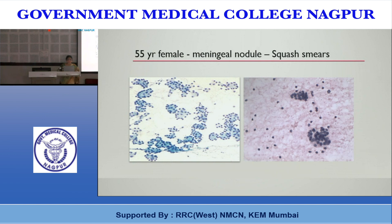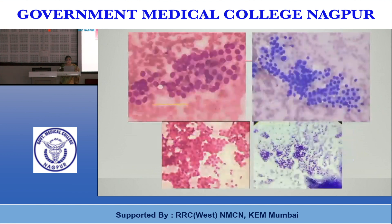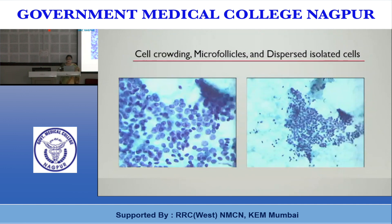In some cases, crowded follicular cells form ribbons or trabeculae more prominent than microfollicles, or sheets within which microfollicles must be searched. At times, plenty of dispersed cells are seen alone with no formations, showing mild variation in nuclear size and evenly dispersed granular chromatin. Although most follicular neoplasms are highly cellular, cellularity by itself is not sufficient to merit this designation.